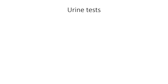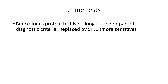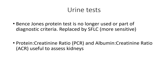Let's talk about urine tests. You may have heard of the Bence Jones protein test — this used to be widespread in practice, but it's no longer used and it's not part of the diagnostic criteria, because it's been replaced by the serum-free light chain test, which is much more sensitive. Tests you can use to assess the kidneys and protein activity are the protein-to-creatinine ratio (PCR) and the albumin-to-creatinine ratio (ACR), and you can do both and then compare them.